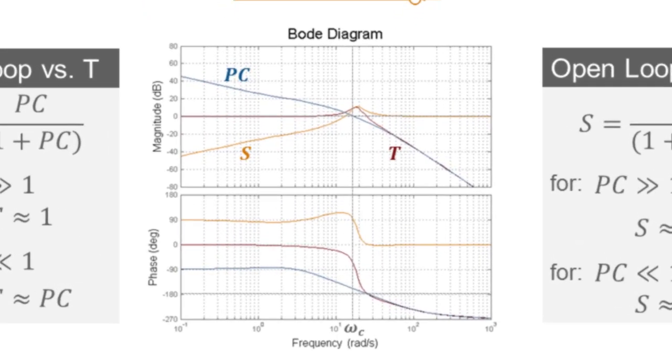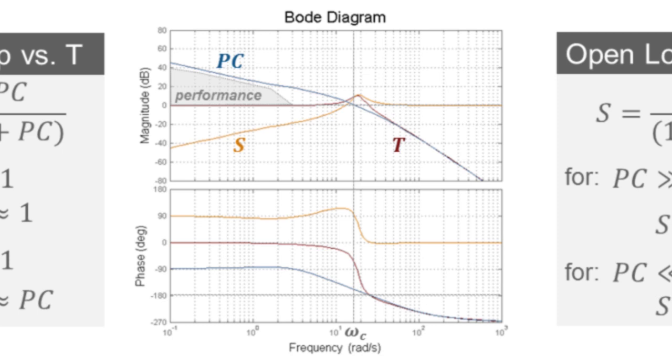So just to summarize, if we want good tracking performance characteristics in T and good disturbance rejection in S, we need to make sure that our open-loop design has a high enough gain at low frequencies. In other words, PC needs to be well above 0 dBs, at least a decade below the crossover frequency.